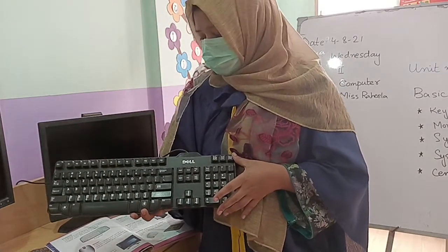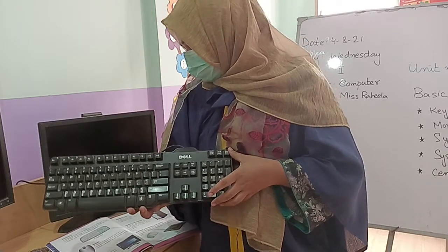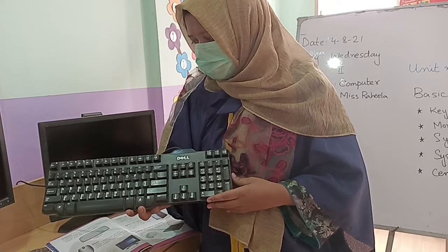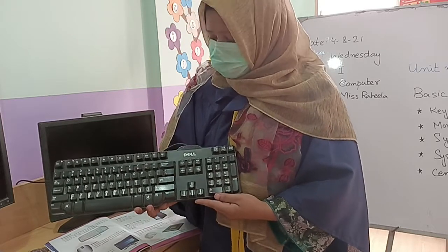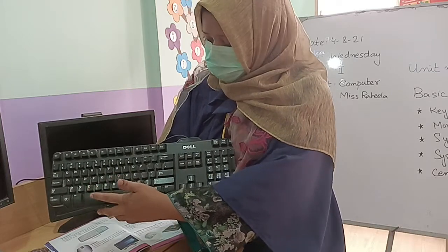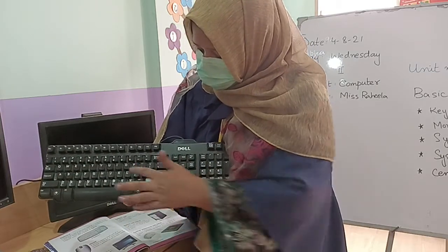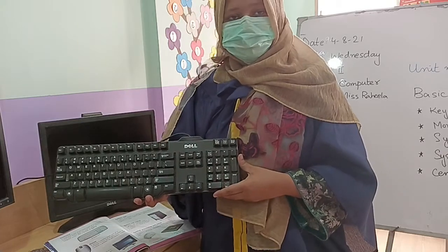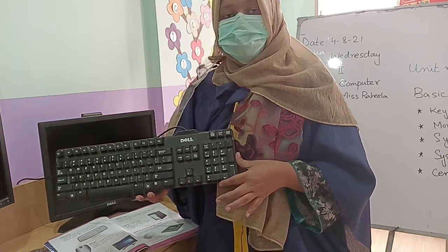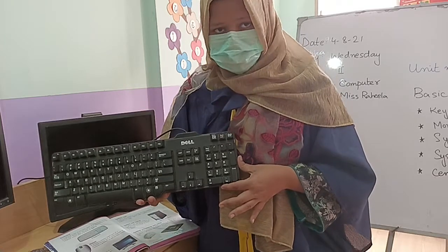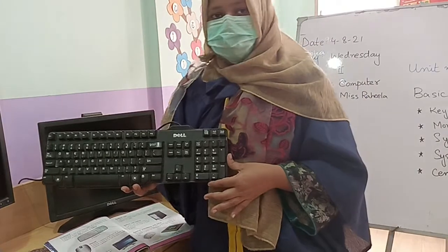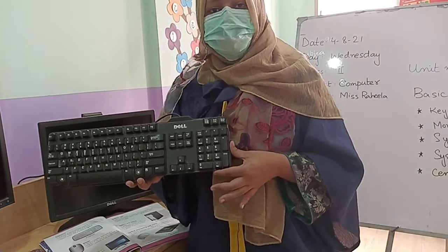We can do typing. In the book, if we have to write a word on a computer, then we will press the keys on the keyboard. We press C, then O, then M, then P, then U, then T, then E, then R. That is how we type.